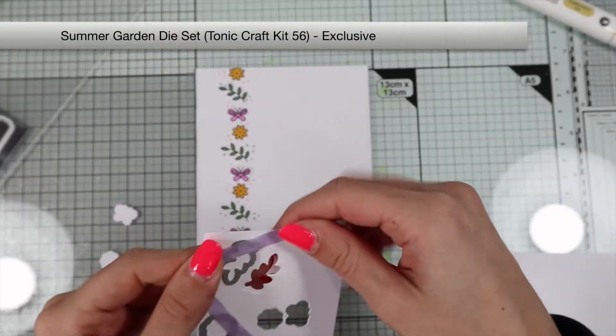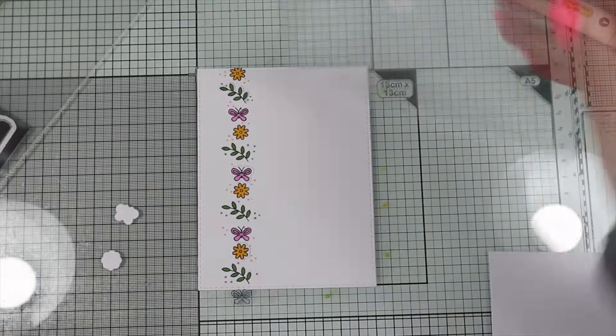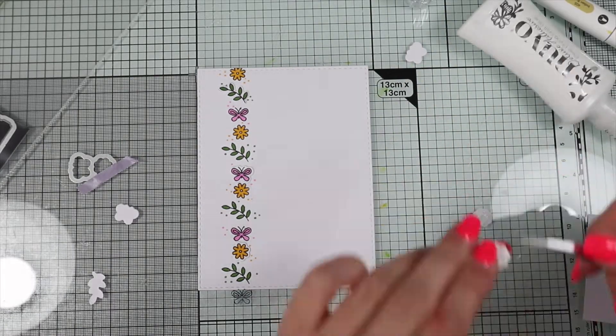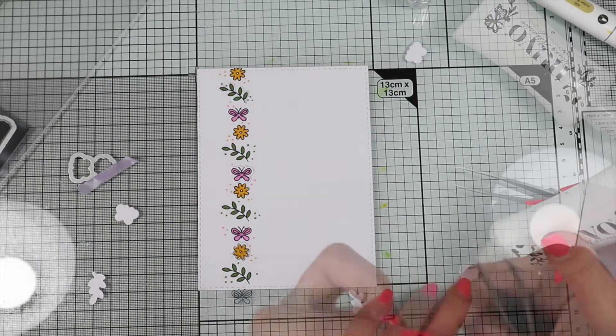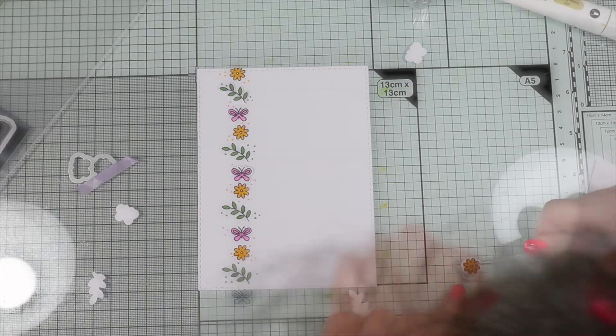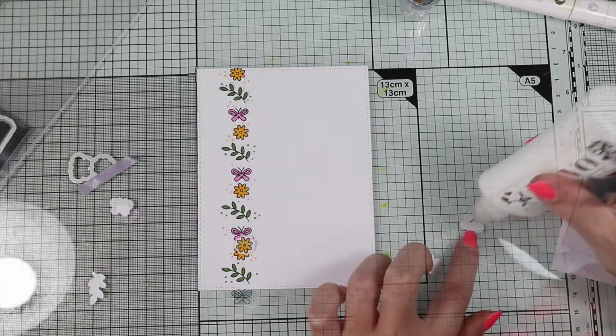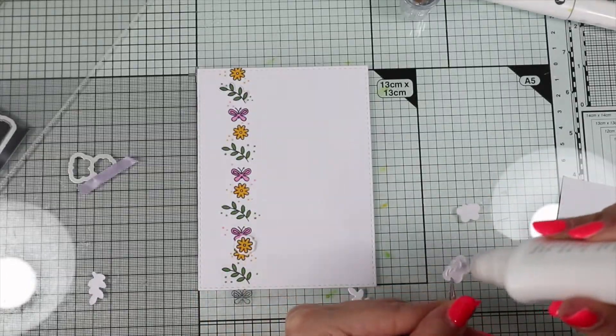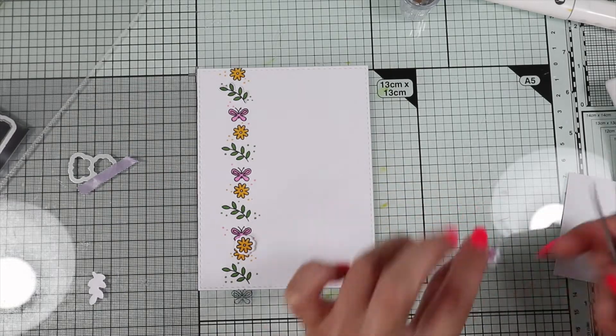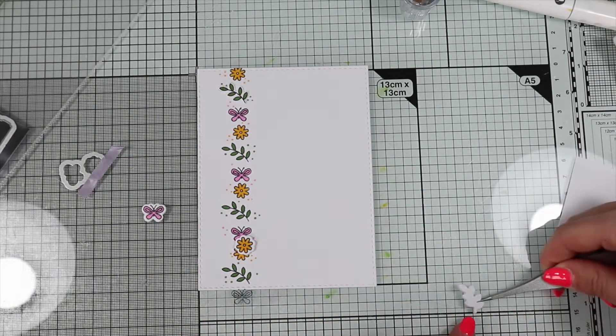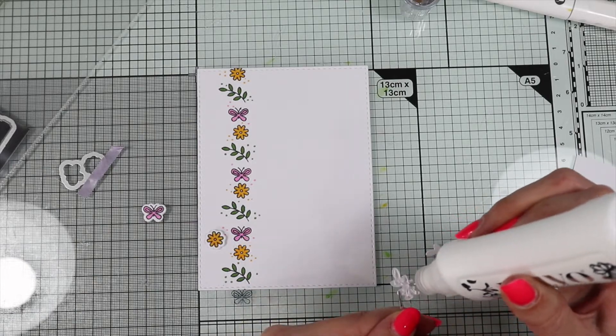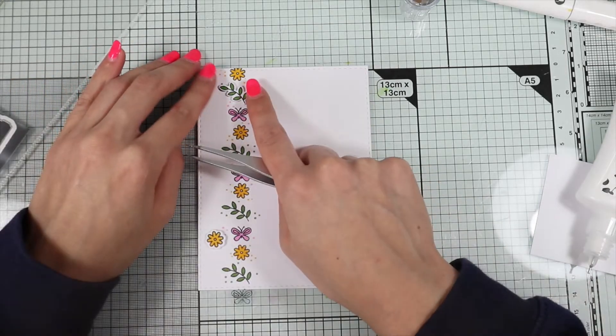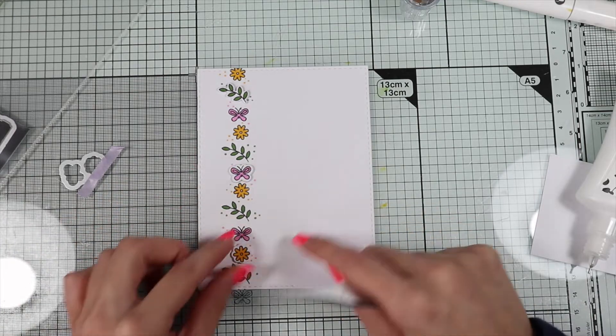Then I die cut the three figures with the coordinated dies. With the same dies, I'm going to die cut each figure two more times on white cardstock. Now I glue the die cuts one on top of the other, thus creating a very thick element. By gluing these three figures over the background stamps, I will get a beautiful embossed effect.